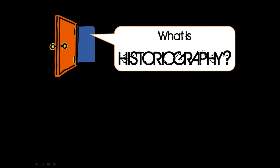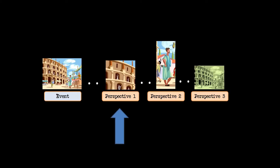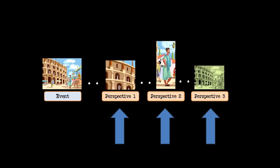So if we ask ourselves then what is historiography, we would say it's the study of historical perspectives — not necessarily the historical events themselves. Going back to that timeline, there's one event and at least three different perspectives. The historiographer would ask about those perspectives, not the event: why do they focus on that one specific angle? Why do these other people later in history focus on this other angle? And why do still others focus on yet another angle?